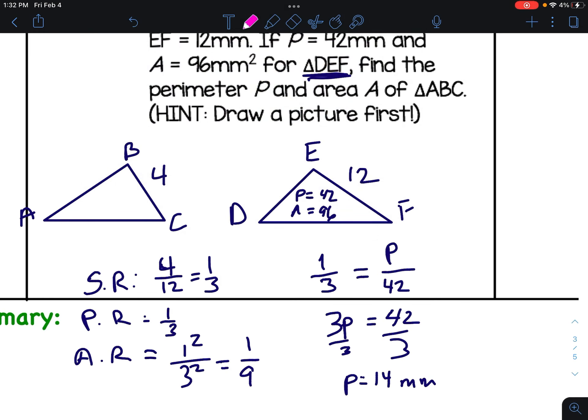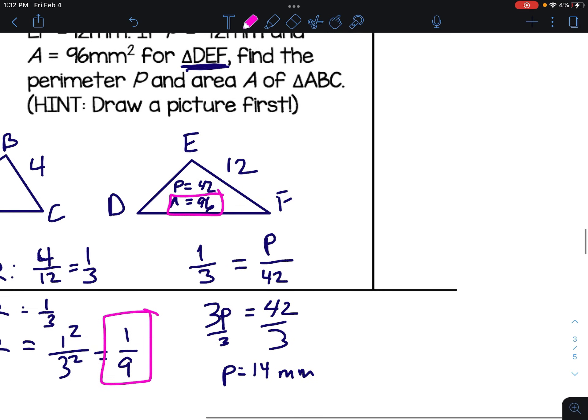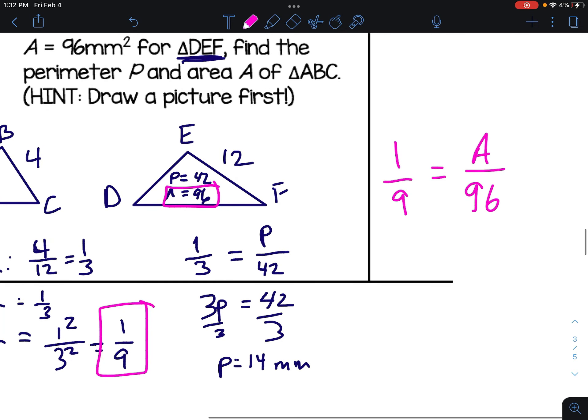Do the same thing for area. We're going to use 96 this time and we're going to use the area ratio. So 1 over 9. And again, this is the big area, so that goes on the bottom with the big number. We don't know the other area. 9 times A is 9A equals 96. Divide 96 by 9, it's not going to go in there the greatest. It's 10.6 repeating, 10 and 2 thirds, however you want to look at it.